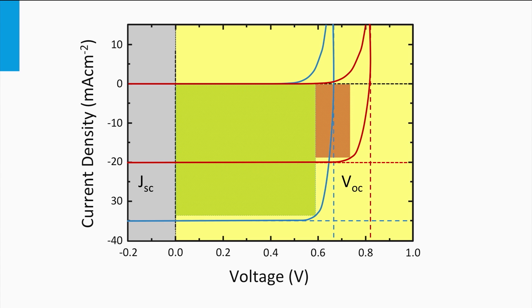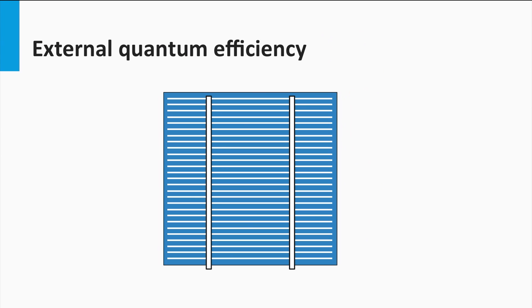An important conclusion of this simple exercise is that the choice of semiconductor material determines the open circuit voltage and the short circuit current density through its bandgap. Now we are going to look in more detail at how spectral utilization of a solar cell can be determined and measured.